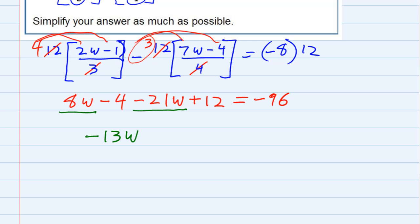Then, for the number portion, we've got minus 4 and a plus 12. We can put those together as well. Again, the signs are different, so I subtract and keep the sign of the larger. That gives me plus 8 equals the negative 96 on the other side.